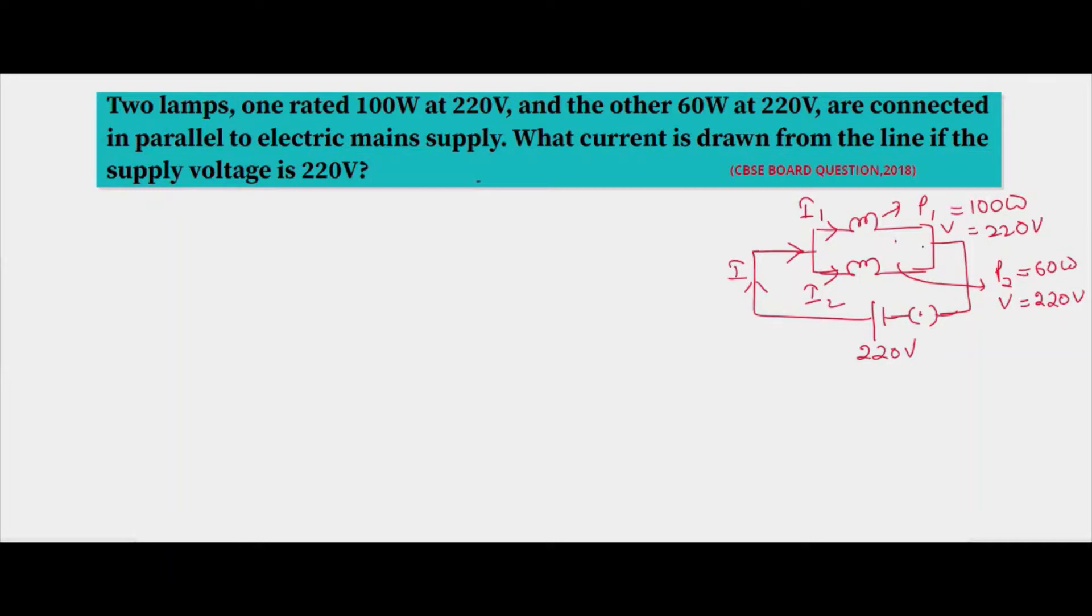In a series circuit the current remains the same and the voltage changes across each resistor, whereas in a parallel circuit the voltage remains the same and the current across each resistor changes.